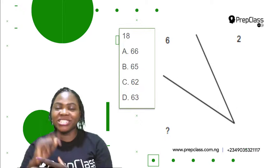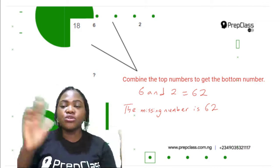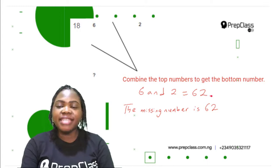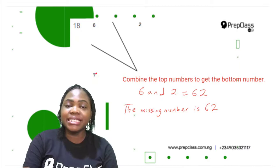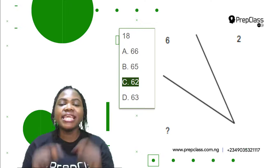Now Question 18. We are given two top numbers: 6 and 2, and we are asked to find the missing bottom number. Remember from the samples, combine the two top numbers to get the bottom number. 6 and 2 combined gives 62, so the missing bottom number is 62. The correct option is C, 62.